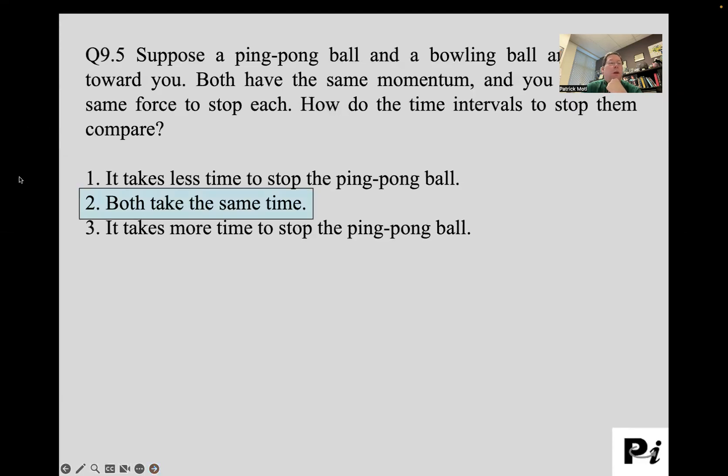All right. So they're both going to take the same time. So let's write out the impulse momentum theorem. So we're exerting the same force. We're asking about the time interval. And that impulse is equal to the change in momentum. All right. So both have the same momentum and you stop each. So delta P is the same for both the ping pong ball and the bowling ball. Also given the fact that you use the same force to stop each. So this force is the same. Therefore, delta T, the time interval to stop them has to be the same.